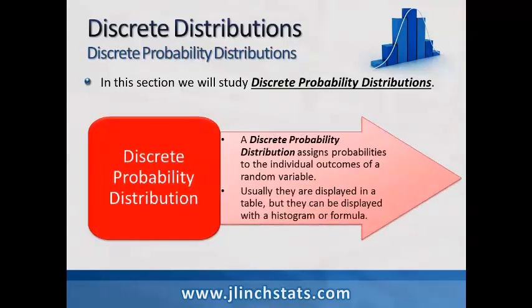A discrete probability distribution basically assigns probabilities to the individual outcomes of a random variable. Usually they're displayed in a table, but they can be displayed with a histogram or a formula. In many discrete probability distributions, we have a finite number of possible outcomes, though it is possible to have an infinite number, with values defined by counting numbers or whole numbers.